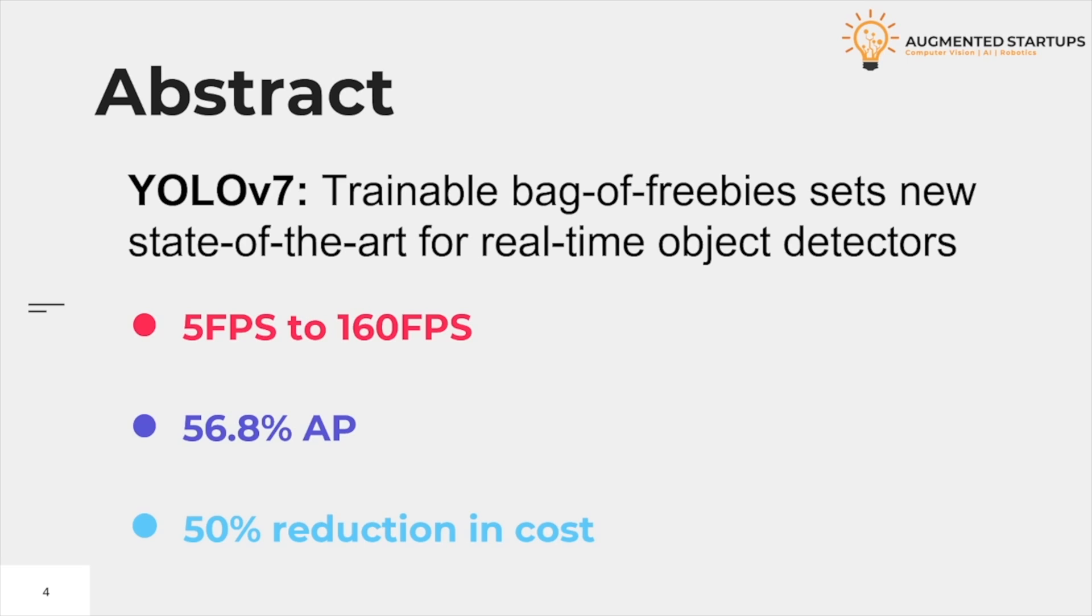YOLOv7: Trainable Bag of Freebies Sets New State-of-the-Art for Real-Time Object Detectors. We'll learn about what bag of freebies means later in this video. The paper states that the model can efficiently predict video inputs ranging from 5 fps to 160 fps.